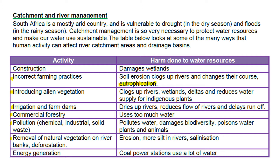Removing natural vegetation on the riverbanks and general deforestation. There's a term we're going to look at called riparian vegetation. Basically, if you remove the natural vegetation along the banks of the river, the riverbanks become unstable and erosion happens more easily. And then a very South African — but really a worldwide — problem is energy generation. We're still using coal-fired power stations for most of our electricity, and these use immense amounts of water.